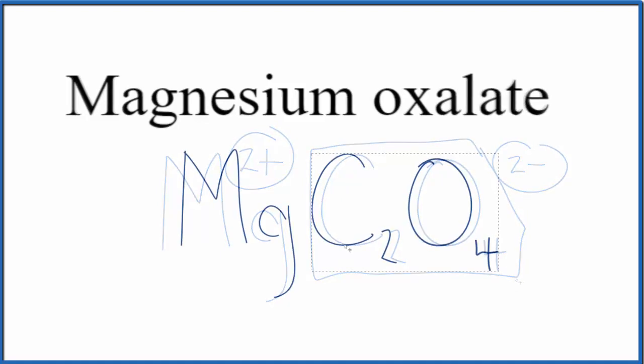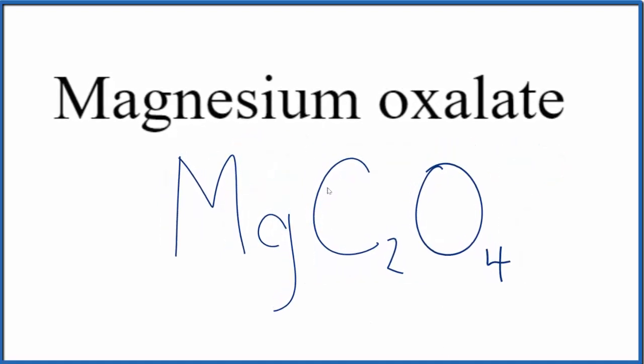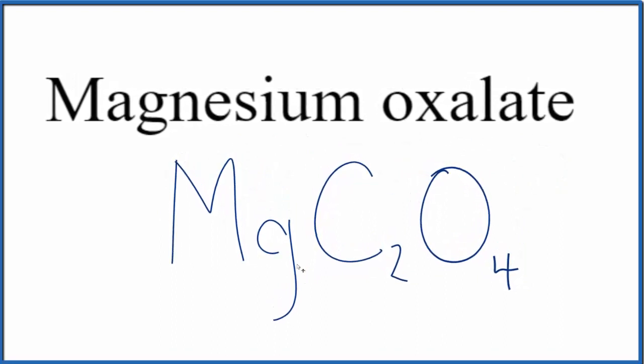So this is the formula for magnesium oxalate, MgC2O4. This is Dr. B with the formula for magnesium oxalate. Thanks for watching.